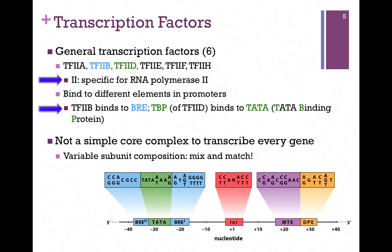What about the proteins that recognize these different elements? There are general transcription factors, referred to as transcription factors 2A, B, D, E, F, and H. The "2" refers to the fact that there are factors specific for RNA polymerase 2, the polymerase responsible for making messenger RNA. They bind to different elements in the promoters. TF2B binds to that BRE element, and the TBP protein of transcription factor 2D — that is, the TATA binding protein — binds to the TATA box. So it's not a simple core complex to transcribe every gene as we saw in the bacterial system. We can mix and match promoter elements and the transcription factors that recognize them, giving us variable subunit composition and tremendous control not only over which genes are expressed, but also to what level.